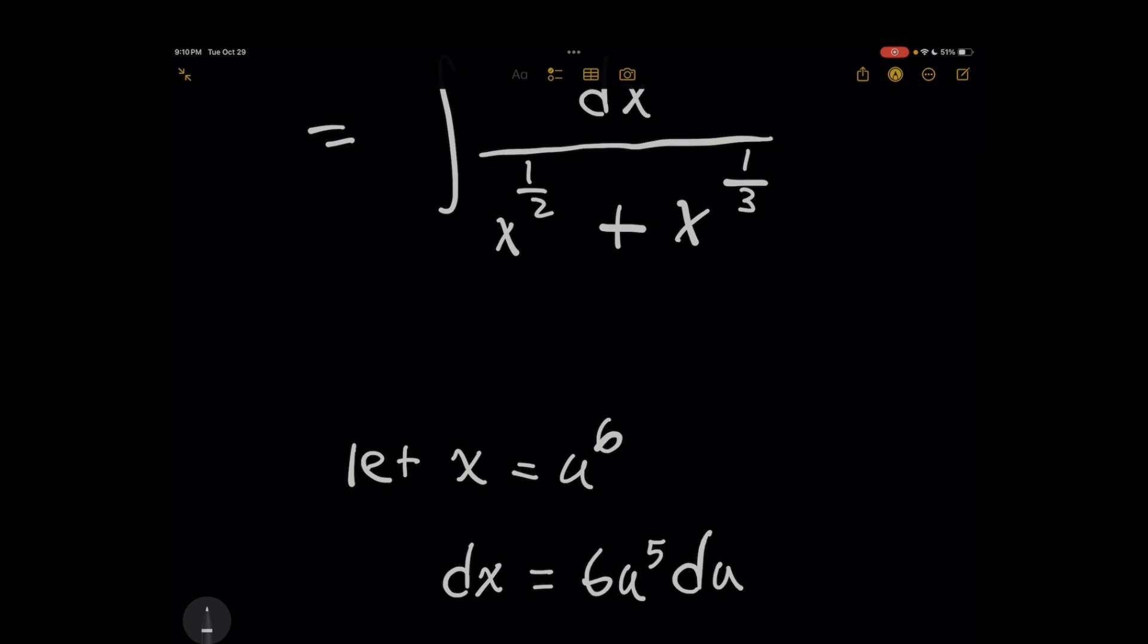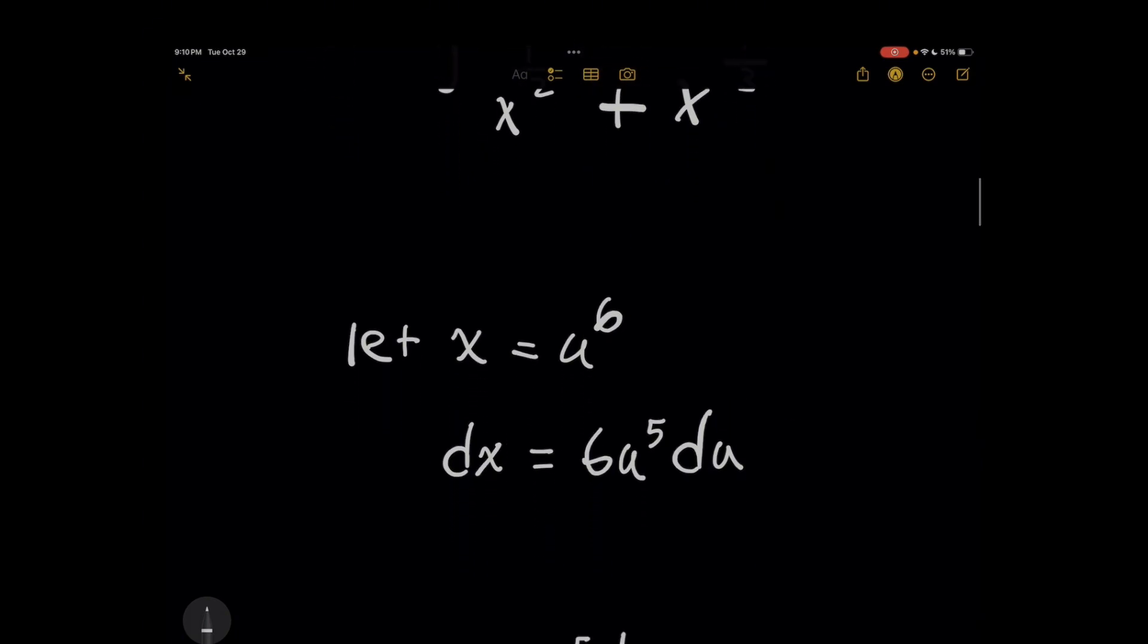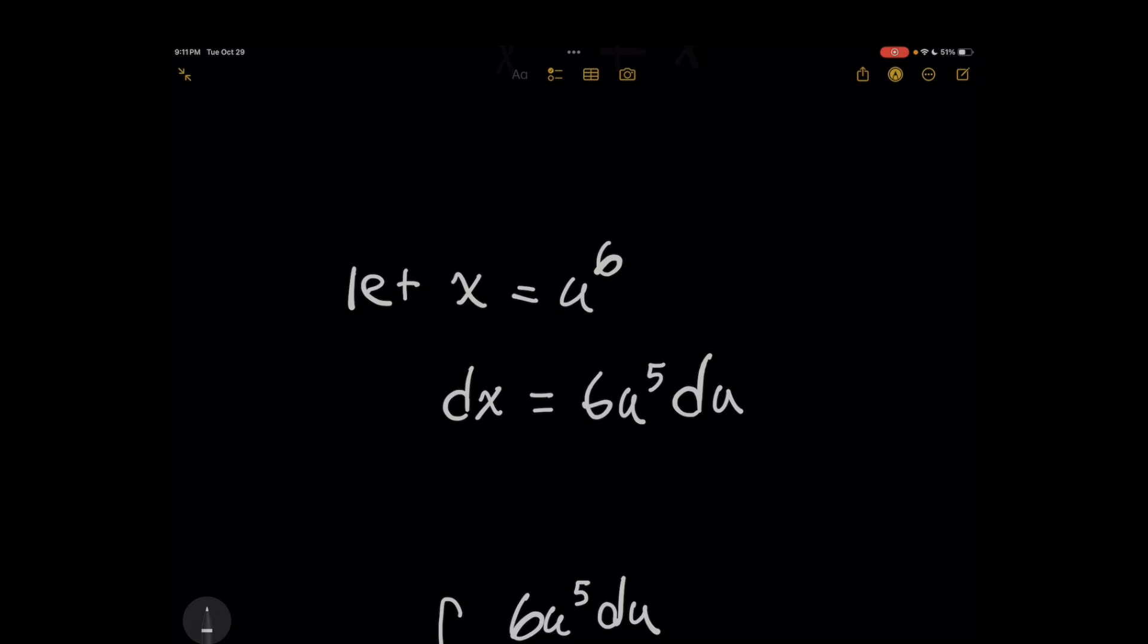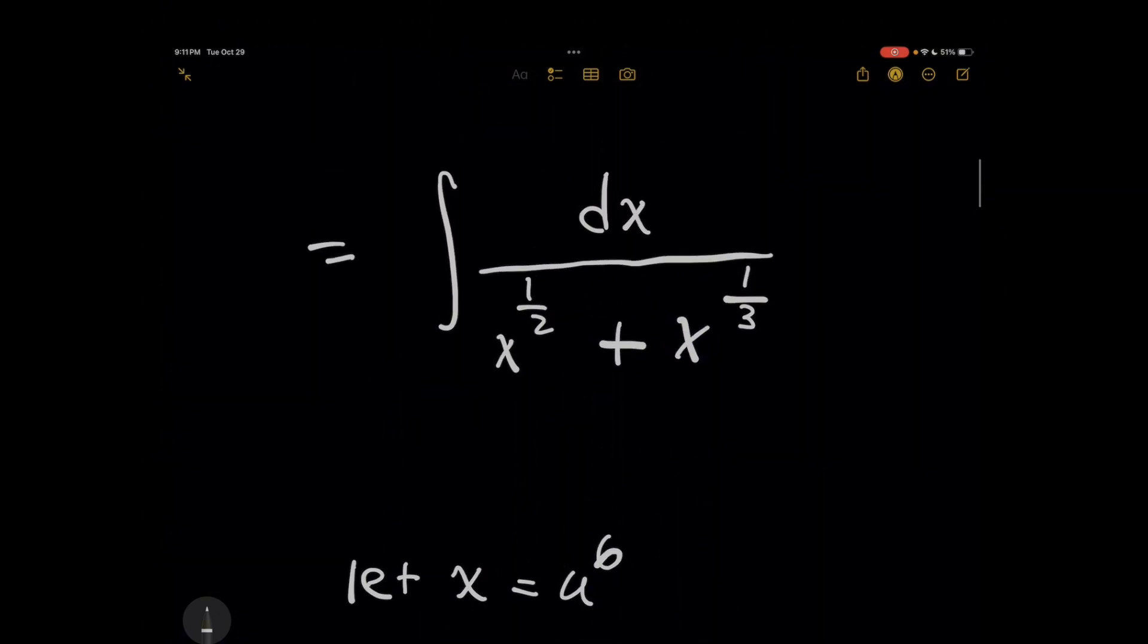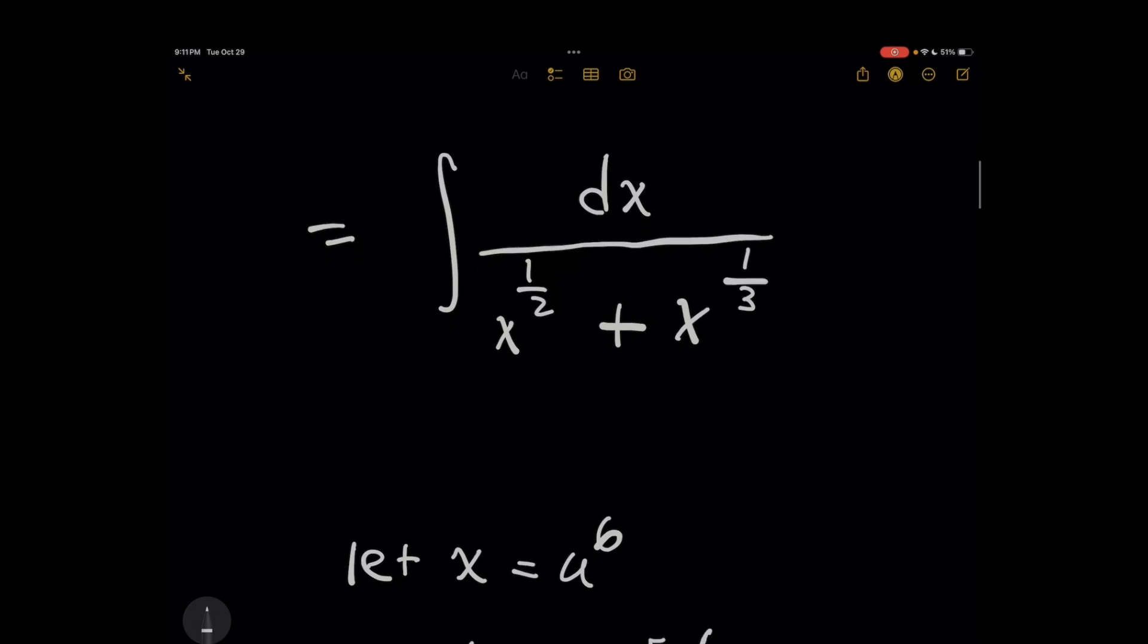So we let x equal u to the 6th versus u equals x to the 6th. That way, when you take the derivative here of both sides, you will get dx isolated on the left here, which is what we see in this integral, and that means you can safely make the substitution.